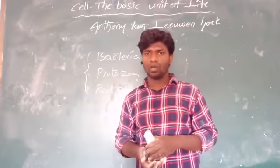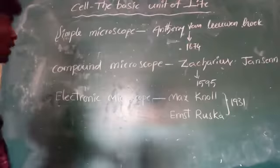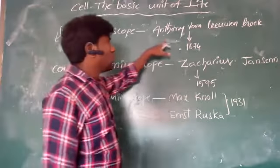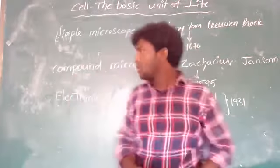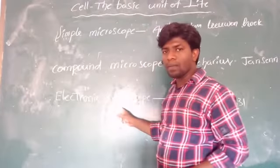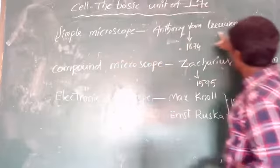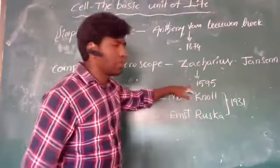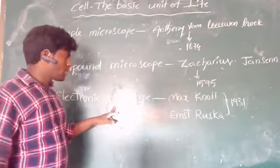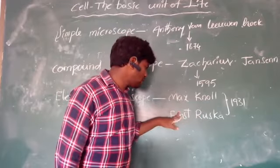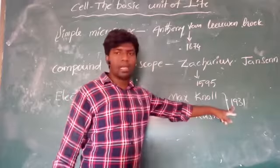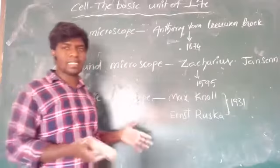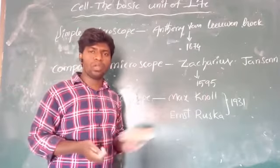There are three types of microscopes. The simple microscope was discovered by Antonie van Leeuwenhoek in the year 1674. The compound microscope was discovered by Zacharias Janssen in the year 1595. The electron microscope was discovered by Max Knoll and Ernst Ruska in the year 1931.